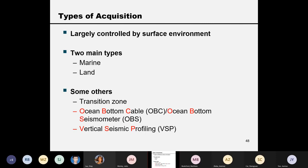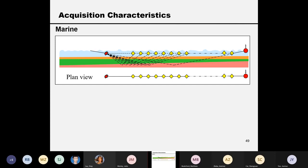Nowadays there are other methods. For example, cross-hole acquisition uses two boreholes — one for the source and one for receivers. With just one borehole, you can have a surface source and receivers in the borehole; that's called a vertical seismic profile, or VSP. You can also place receivers on the ocean bottom — called ocean bottom cable (OBC) or ocean bottom seismometers (OBS). And transition zones cover the range from land through shallow to deeper water.